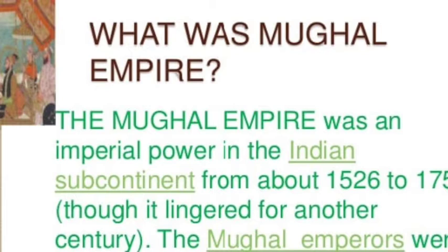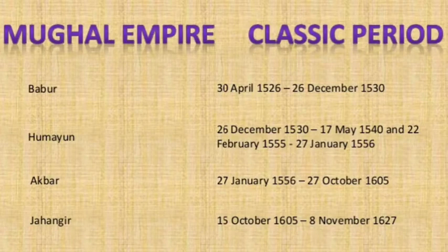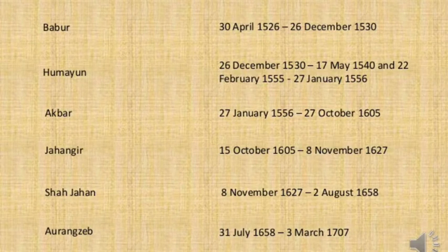The Mughal Empire was an imperial power in the Indian subcontinent from about 1526 to 1757. These Mughal Emperors were Muslims and were direct descendants of Genghis Khan, who was the ruler of Mongol tribes. The Mughal Empire consists of mainly six rulers: Babar, Humayun, Akbar, Jahangir, Shah Jahan, and Aurangzeb. All these rulers ruled during the Mughal dynasty over different periods of time.